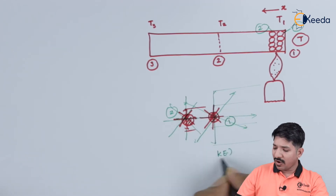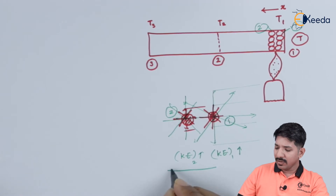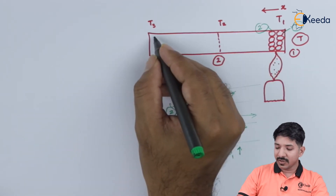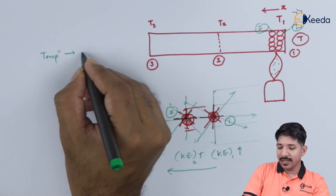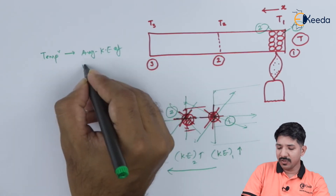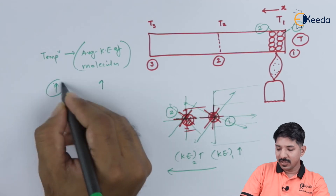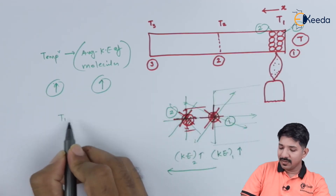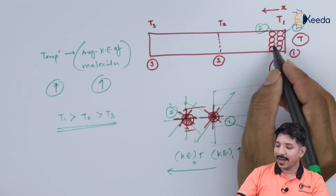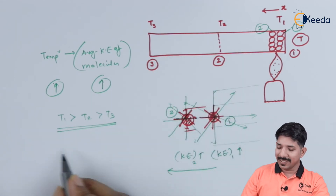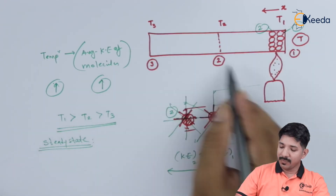The kinetic energy of the first molecule is increased, so this will in turn increase the kinetic energy of the second molecule, and it will keep going until the temperature or kinetic energy of the molecule increases to the third section. Temperature is nothing but the average kinetic energy of molecules. Since the average kinetic energy has increased, the temperature must increase. We will find that T1 will be higher than T2, which will be higher than T3. The energy is dissipated from the source and decreases until it reaches T3. But after a certain period of time, once steady state is reached, the temperature throughout the solid body will be the same.